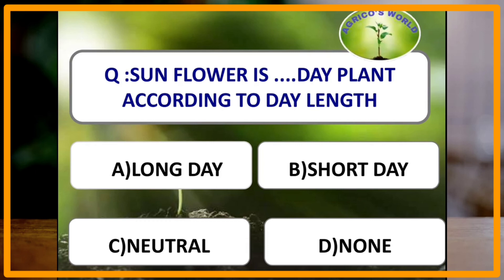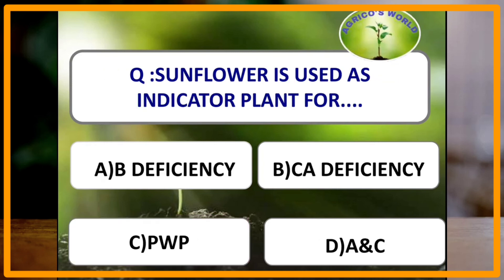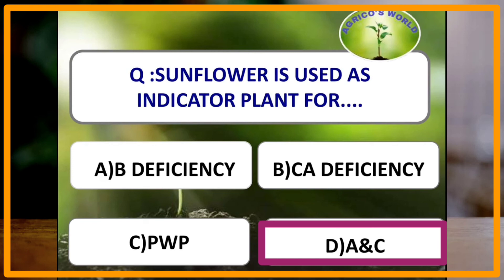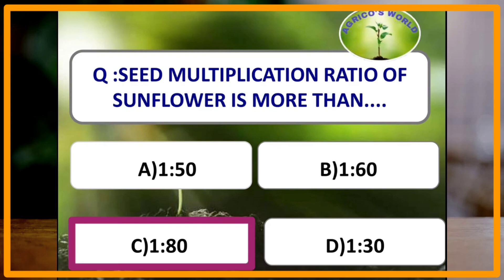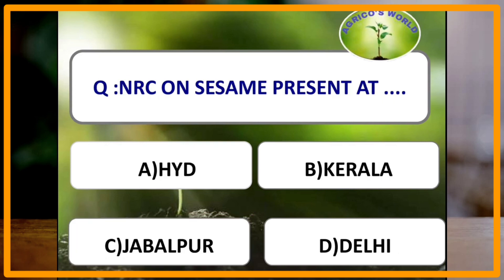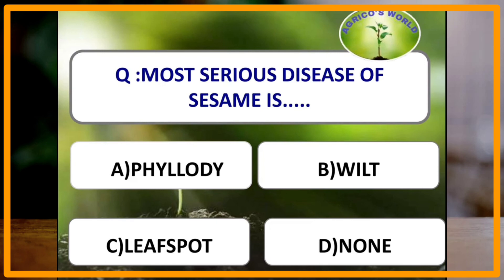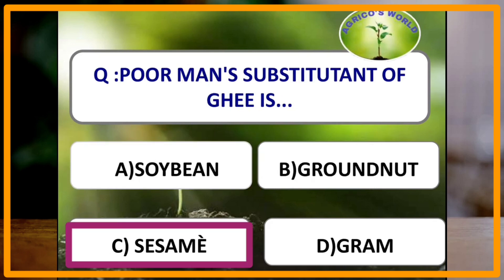Sunflower is which type of plant according to day length? Sunflower is a day neutral plant. Sunflower is used as an indicator plant for both boron deficiency and permanent wilting point. Seed multiplication ratio of sunflower is more than 1:80. Fruit of sesame is called a capsule and fruit of mustard is called Siliqua. NRC on sesame is present at Jabalpur.